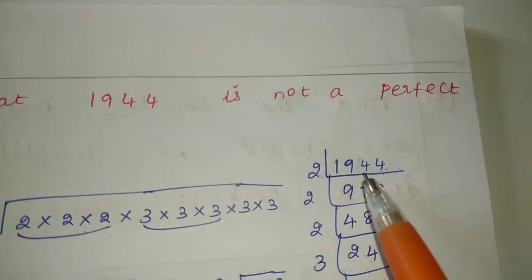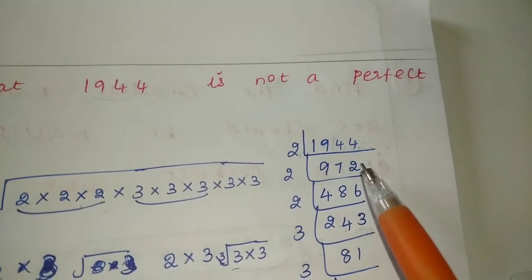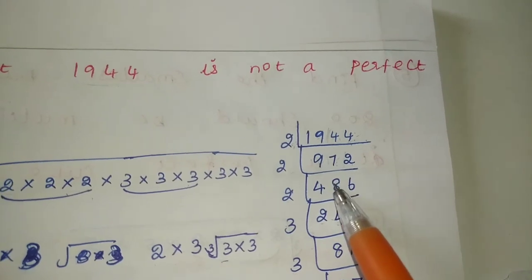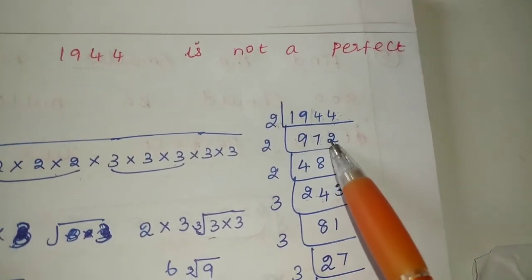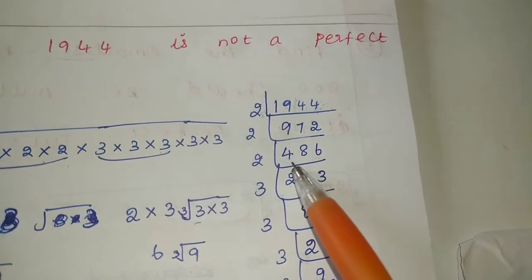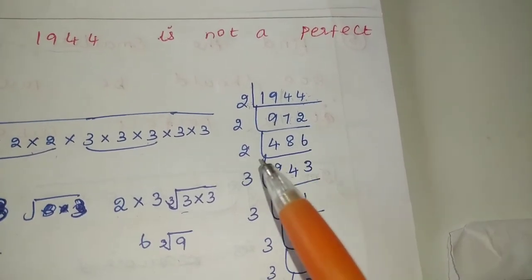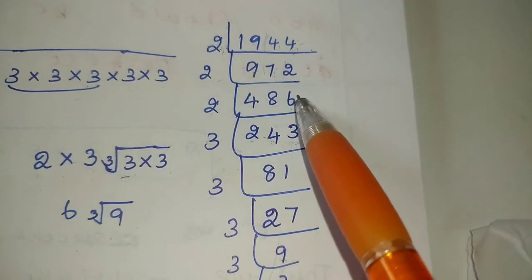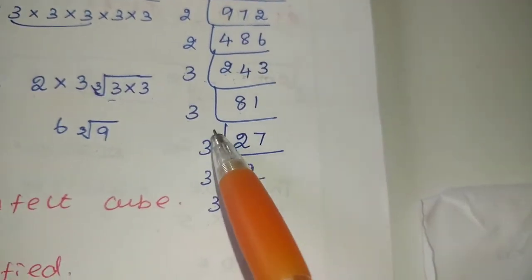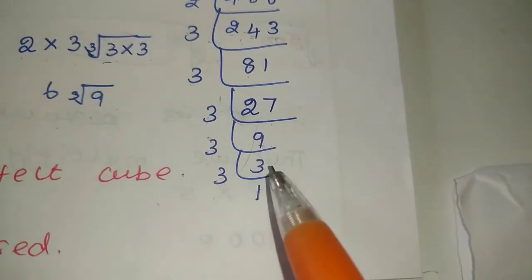Factorizing 1944 using the L method — dividing by 2: 2 × 9 = 18, balance 1; 2 × 7 = 14, balance 1; 2 × 4 = 8, balance 1; then dividing by 3: 3 × 8 = 24, balance 1; 3 × 1 = 3. Continuing with 3 table: 3 × 6 = 18, balance 2; 3 × 7 = 21. The prime factorization of 1944 = 2³ × 3⁵.